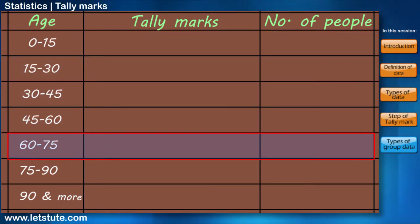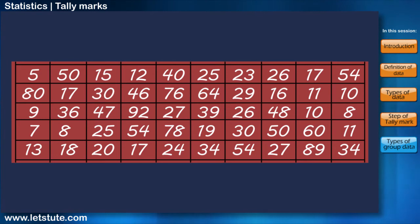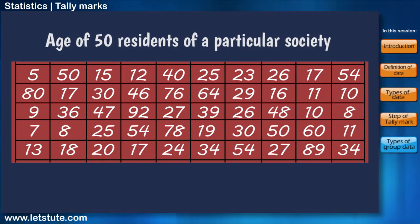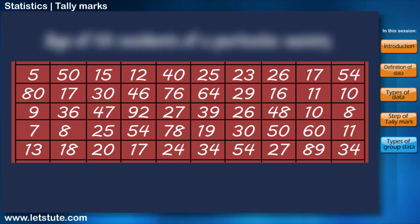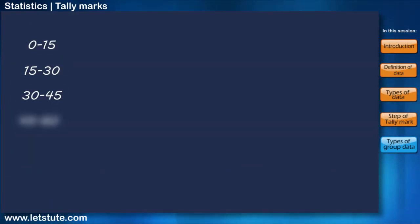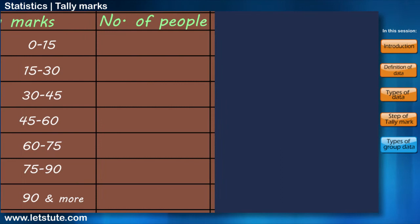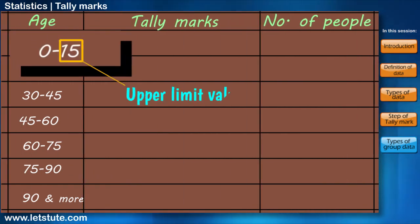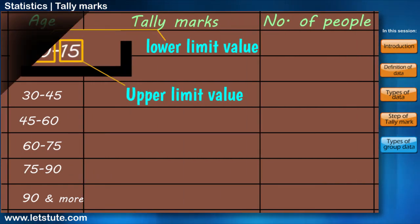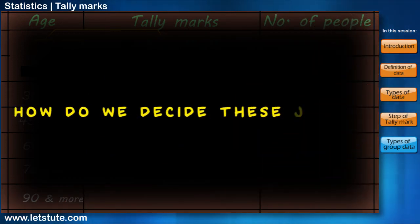Let's take an example. We have data about the age of 50 residents of a particular society. Now it's too difficult to sort the whole data age-wise. So we can try sorting this data into different groups or classes with equal intervals. As you can see, these classes have an upper limit value and a lower limit value. So how do we decide these values?